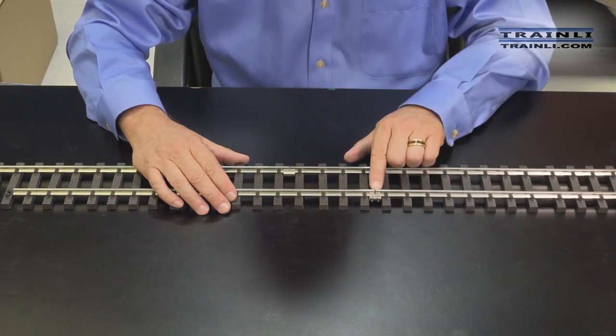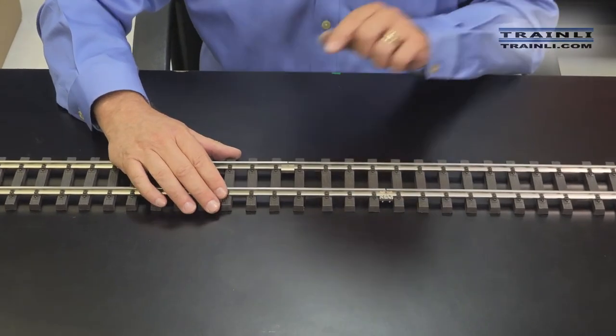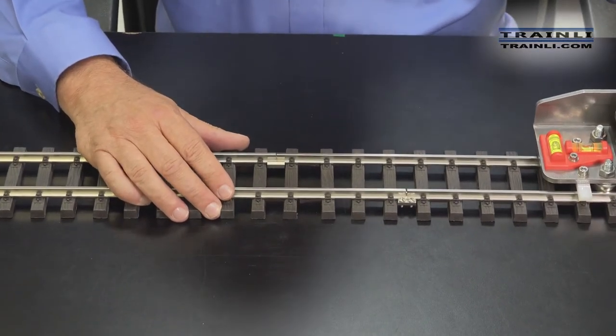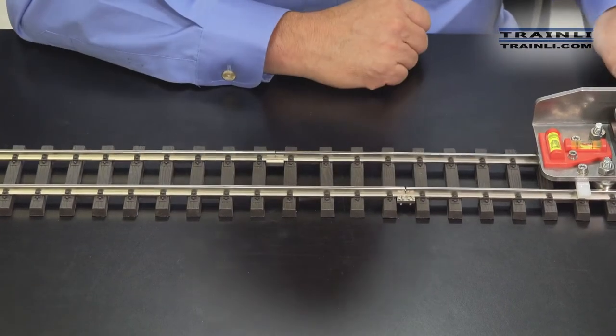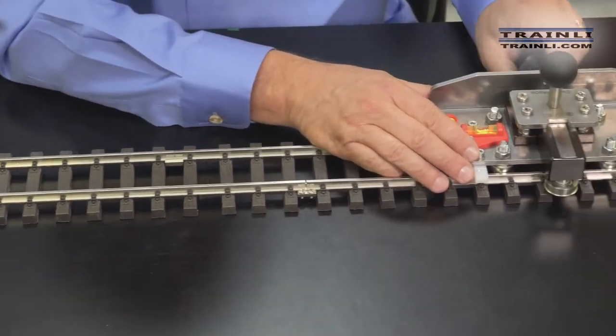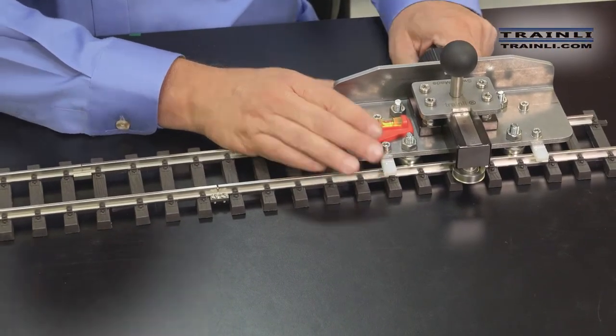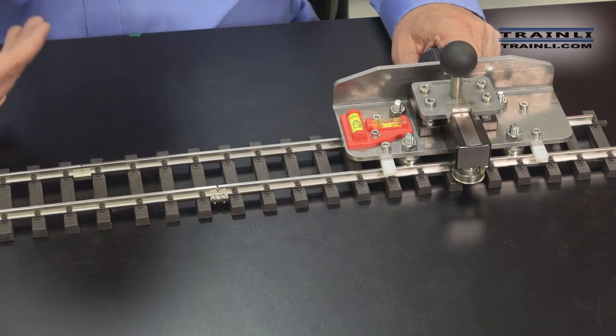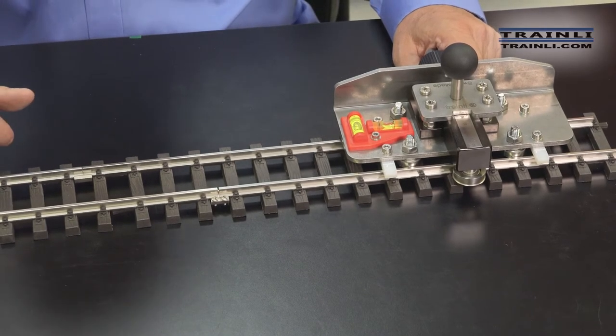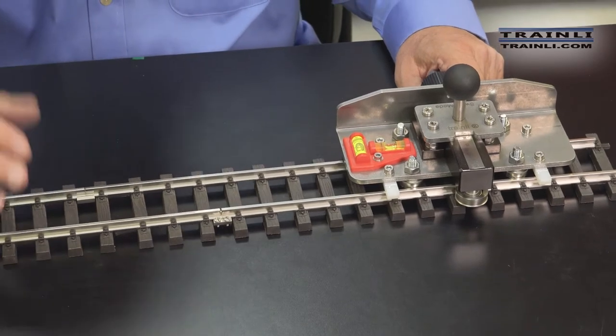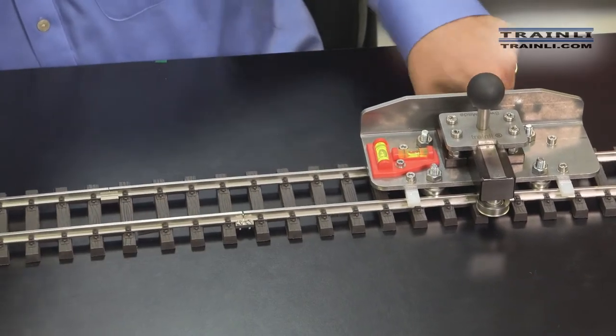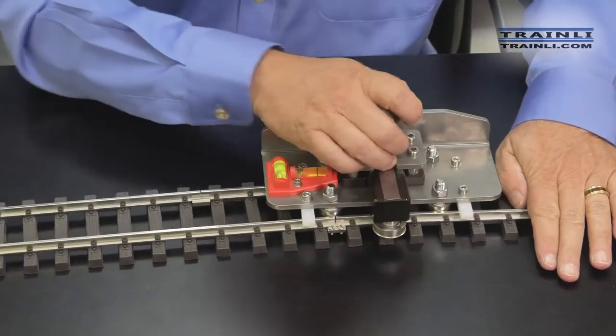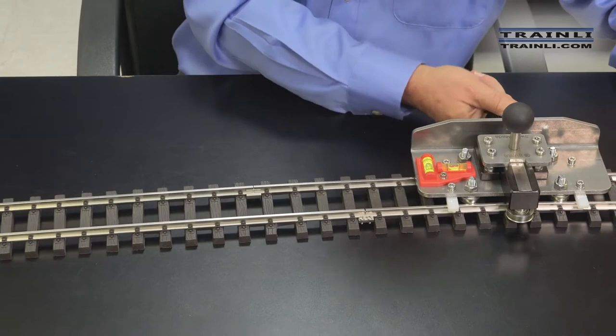These are our rail clamps that we have, and they are low profile, and they work fantastic with this rail bender. So I always like to have a little bit of an offset joint when I'm laying my track. I go ahead and tighten this up. And this is our nickel plated brass track. So it bends as easily as regular brass track, but the maintenance on this is virtually nil.